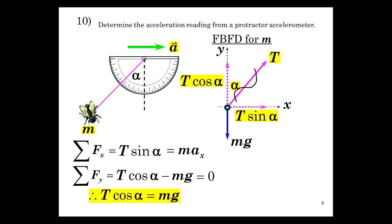What can we do with this? We have t cosine of alpha is mg. We had t sine of alpha is ma. T cosine of alpha is mg. We're really looking for a. Let's divide these.